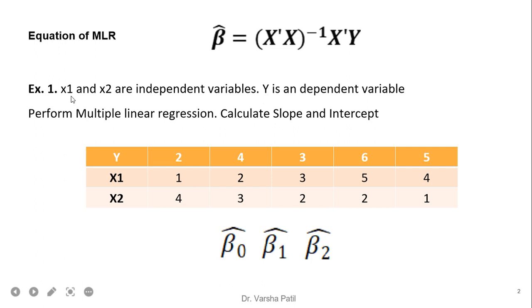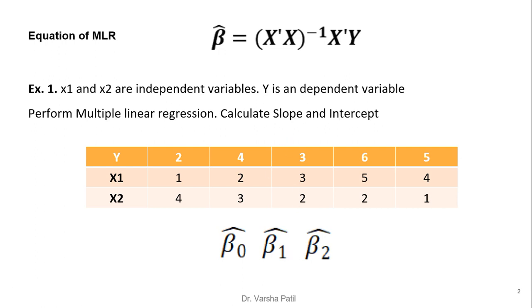Example one: x1 and x2 are independent variables and y is the dependent variable. We need to perform multiple linear regression and calculate the slope and intercept. Here we require to find beta 0, beta 1, and beta 2, where beta 0 is the intercept while beta 1 and beta 2 are the slopes or parameters of the multiple linear regression. The example data is given with y as the dependent variable and x1, x2 as independent variables.